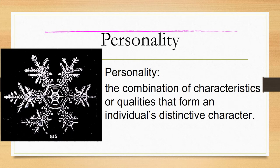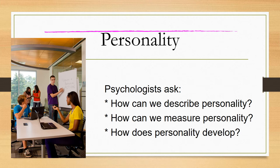Personality is the combination of characteristics or qualities that form an individual's distinctive character — what actually makes you you. You see the snowflake on the side there? All snowflakes are supposed to be different. Personality psychologists ask: how can we describe personality? How can we measure personality? And how does personality develop? We're going to save a lot of the personality development for next week in class.